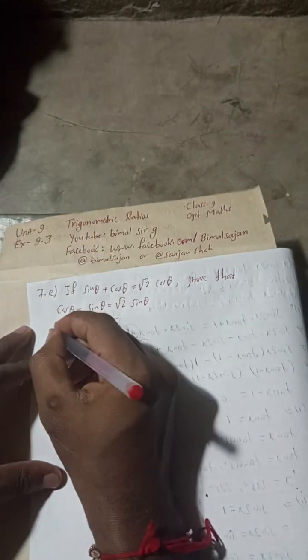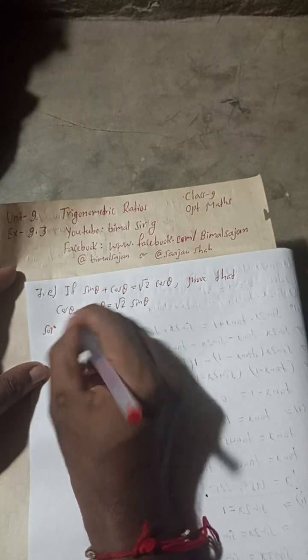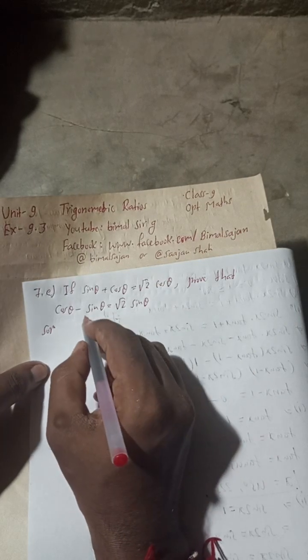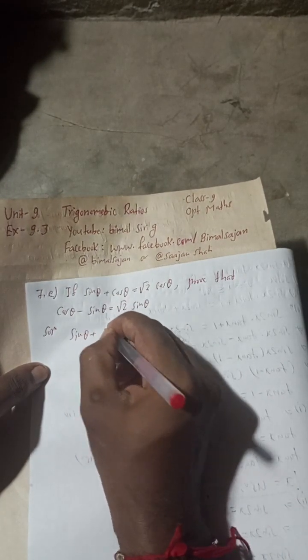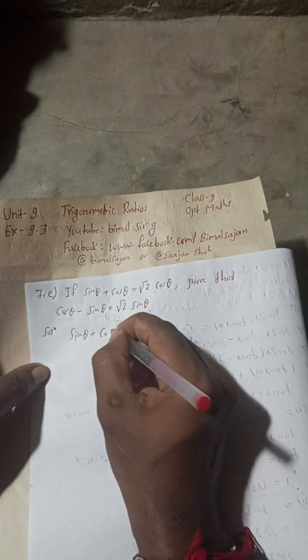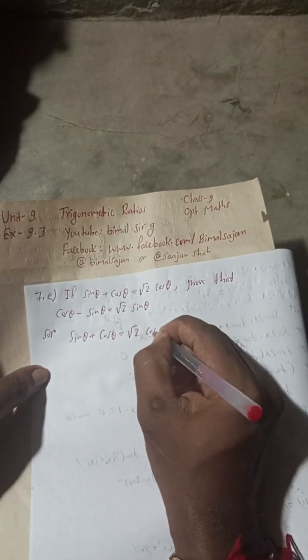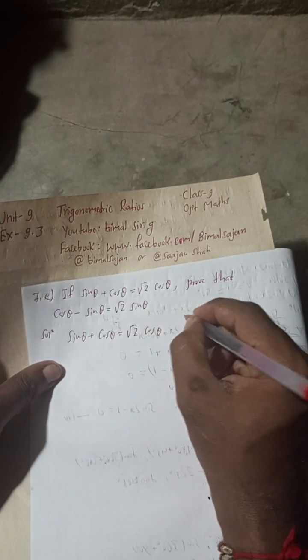So let's begin the solution. If sin θ + cos θ = √2 cos θ, prove that cos θ − sin θ = √2 sin θ. We take the given part: sin θ + cos θ = √2 cos θ, and we will square both sides.